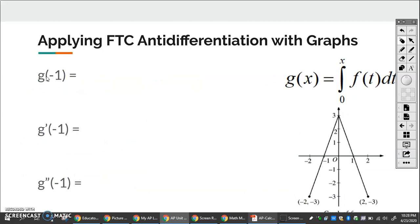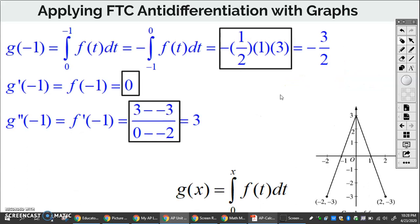So if I want to find G of negative one, that's an integral. G prime of negative one is just a point and then G double prime is a slope. So I have that worked out here.